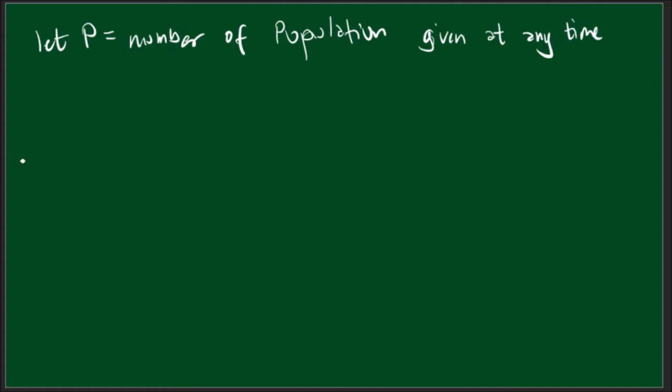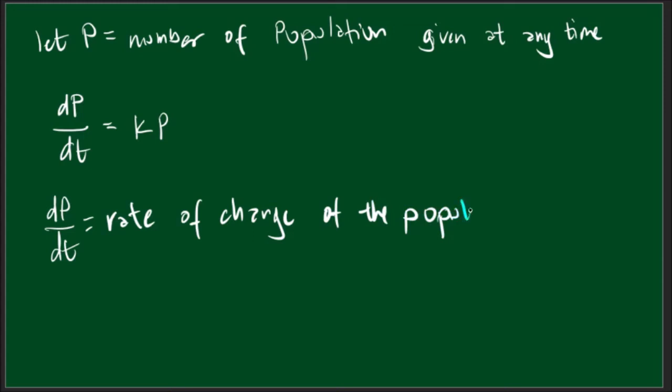So our differential equation will be dp/dt is equal to kP. Of course, dp/dt is the rate of change of the population.